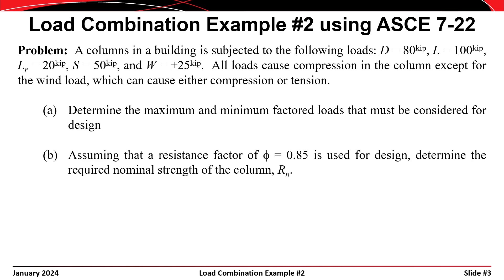All the loads cause compression in the column except for the wind load, which can cause either compression or tension. The objective of the problem is to first determine the maximum and minimum factored loads that must be considered for design, and then, assuming a resistance factor of 0.85 used to compute the design strength of the column, we want to determine the required nominal strength of the column, R sub n.